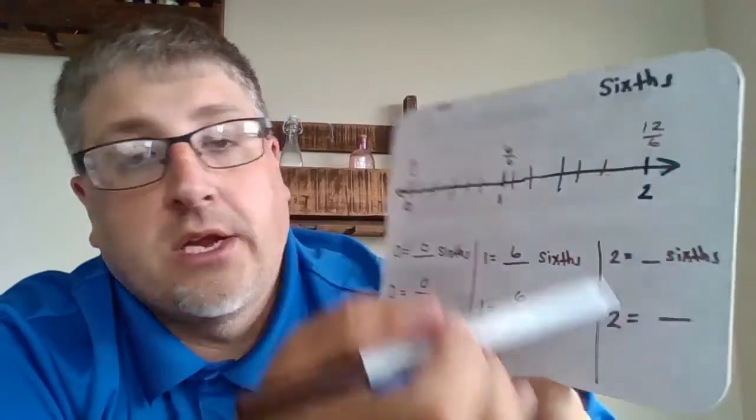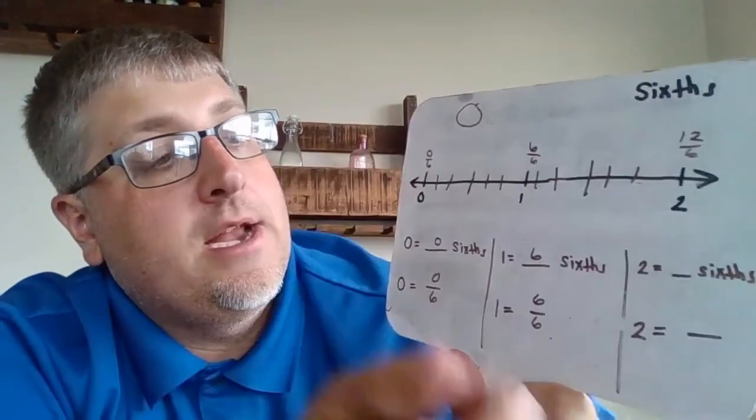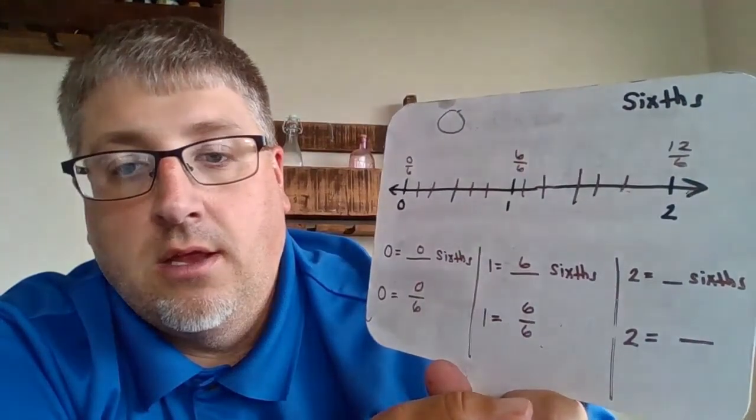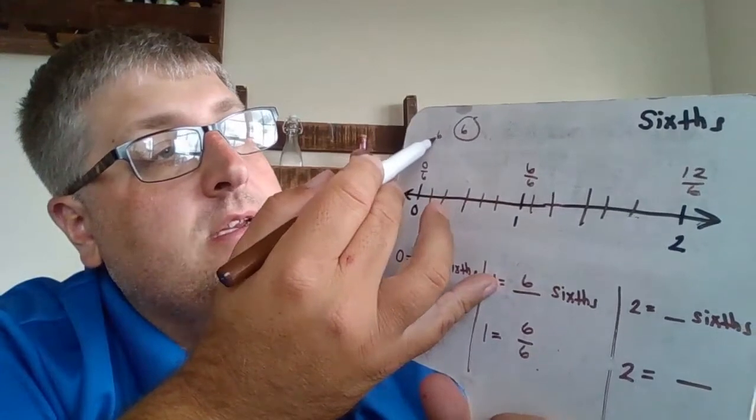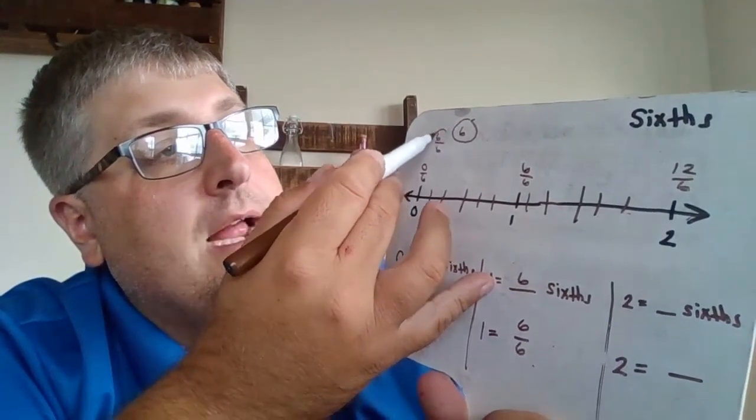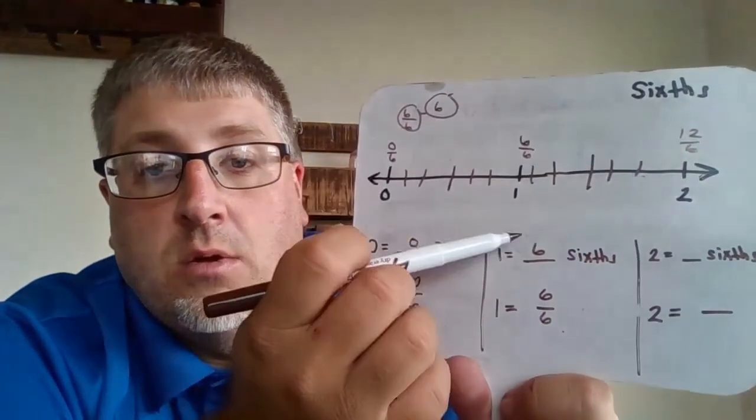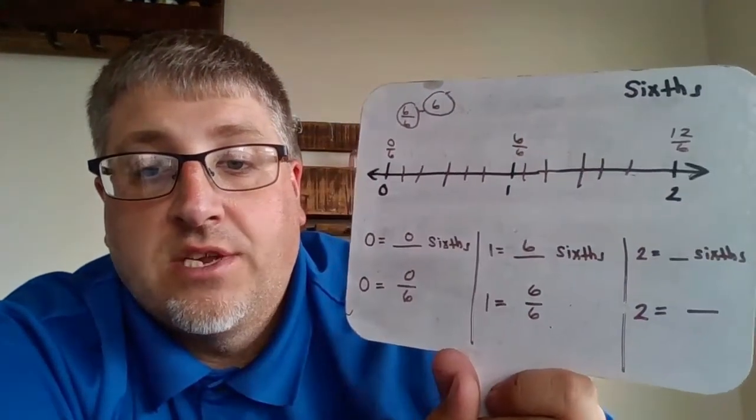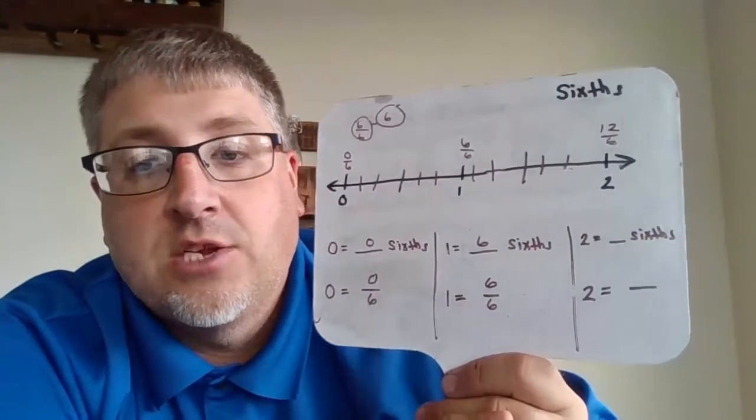And if we wanted to, we could come up here and draw our six in a number bond and then put 6/6 one time. And that number bond would represent our whole there, 6/6, or one, in a number bond fashion.